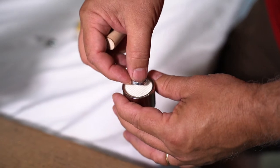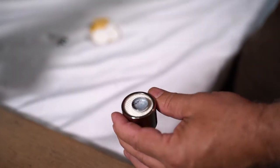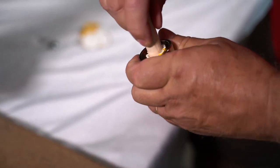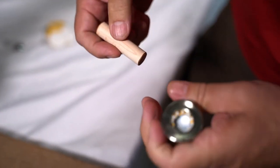Place a button shell on the top of the fabric, hollow side up, and use the pusher to push the shell and fabric into the hole on the top die.